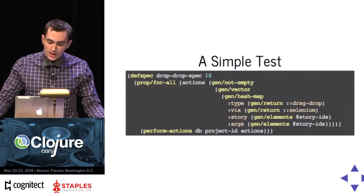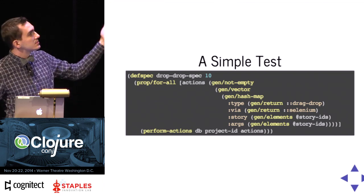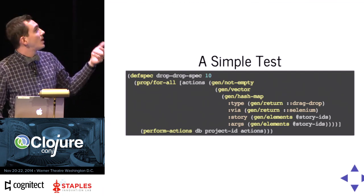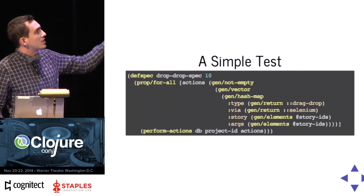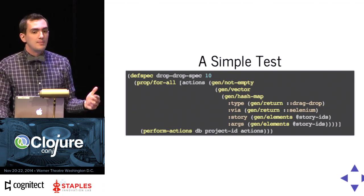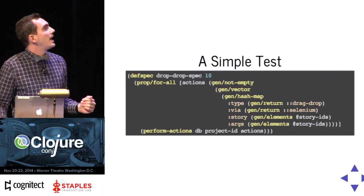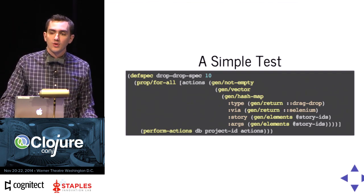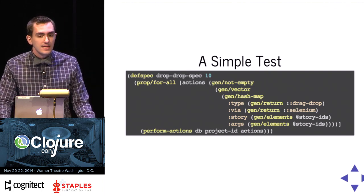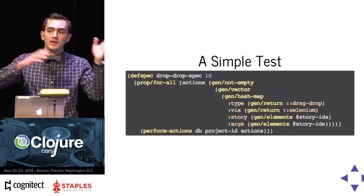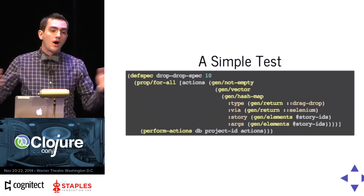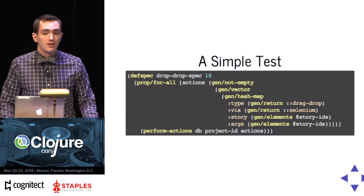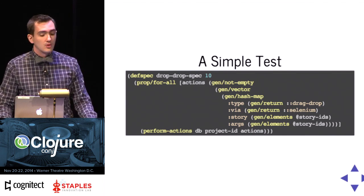A test to run it is actually surprisingly simple. Here's a real test, indented for your convenience, that we actually use. Defspec, drag-and-drop — I want to do 10, could do 100 or 10,000. We're going to generate actions, which is a non-empty vector of hash maps where type and via are hard-coded namespace keywords via gen-return. Story and args are various things that came out of story IDs — the bits of state I pulled from the database and dropped in an atom in my before-fixtures. I can just pick random stories and go do things with them. Then we have a function called perform-actions which does all of the things.